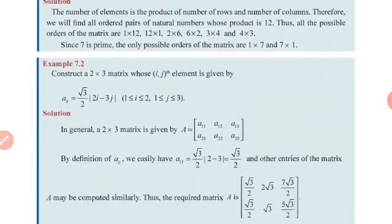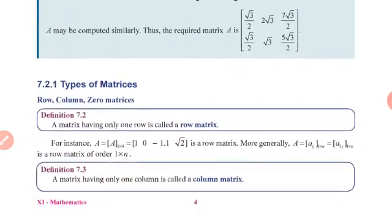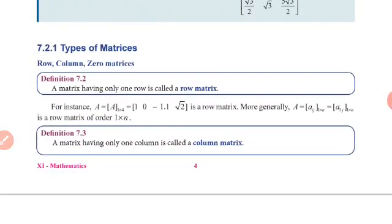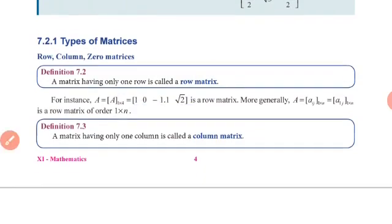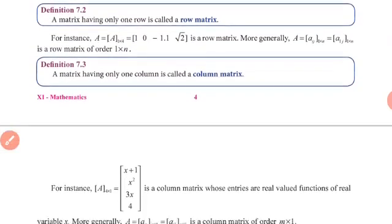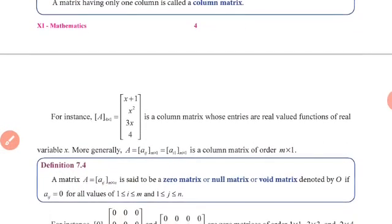Types of matrices: row matrix, column matrix, diagonal matrix, scalar matrix, and unit matrix. A matrix that has only one row is called a row matrix. A matrix having only one column is called a column matrix.